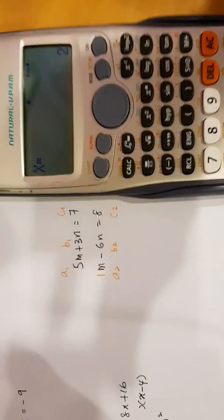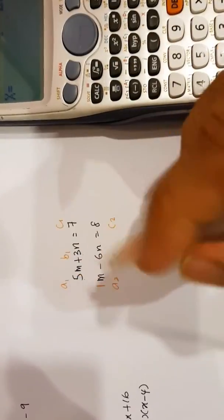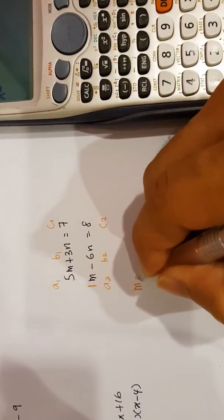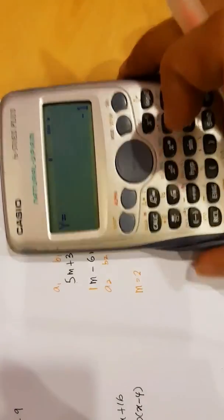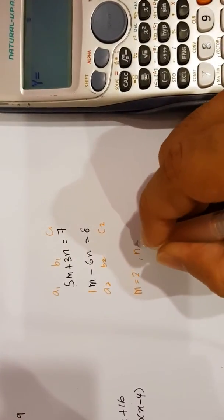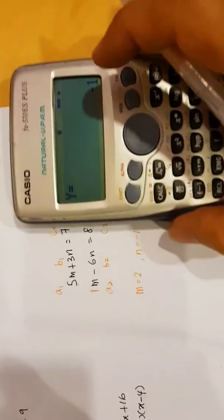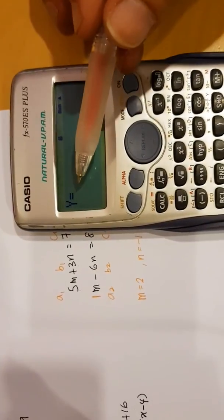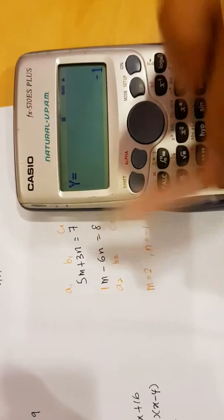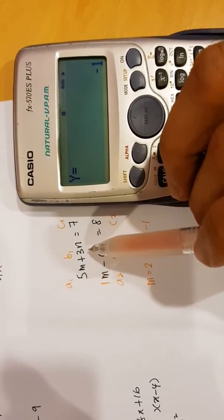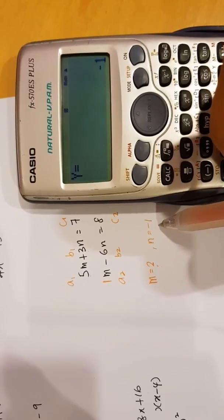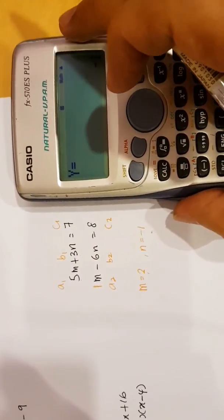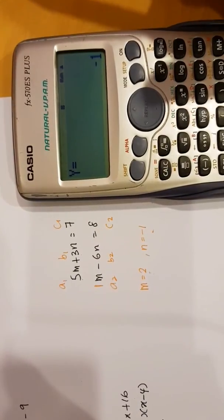That gives me 2. What this means is that the answer, M, equals 2. If I press equal one more time, I get negative 1. That means N equal to negative 1. We have to understand that the calculator only understands X and Y. Because we took M first, followed by N, therefore, this will be the X. This will be the Y. This is how we use the calculator to do simultaneous linear equations.